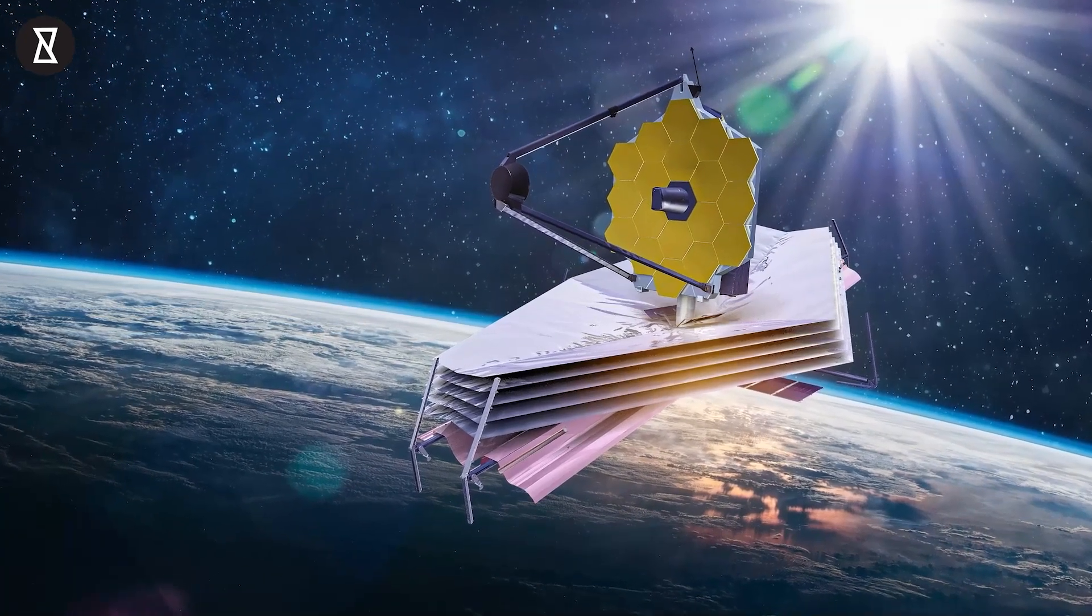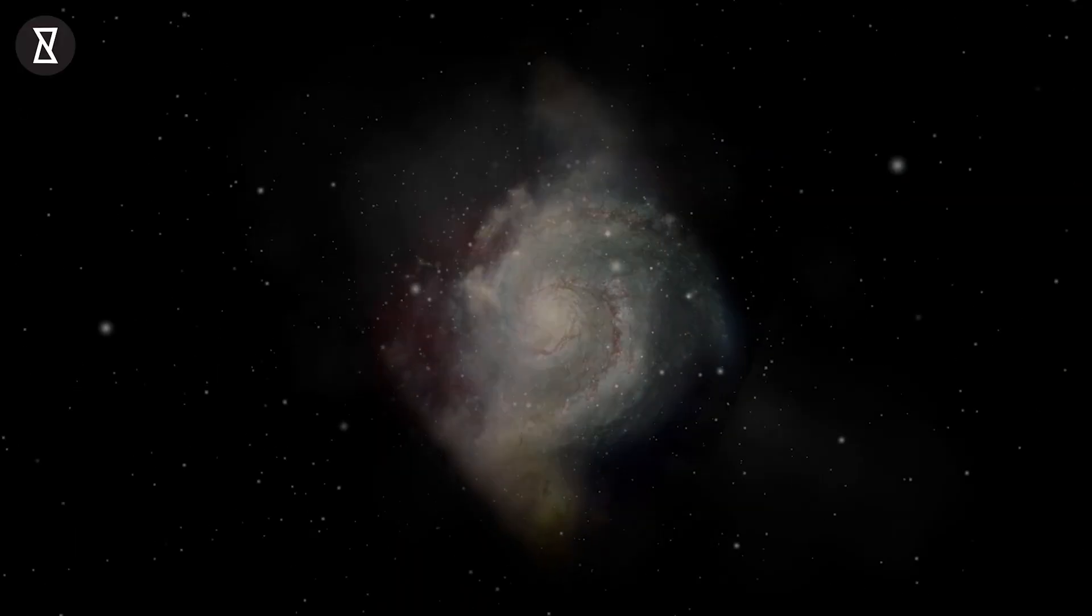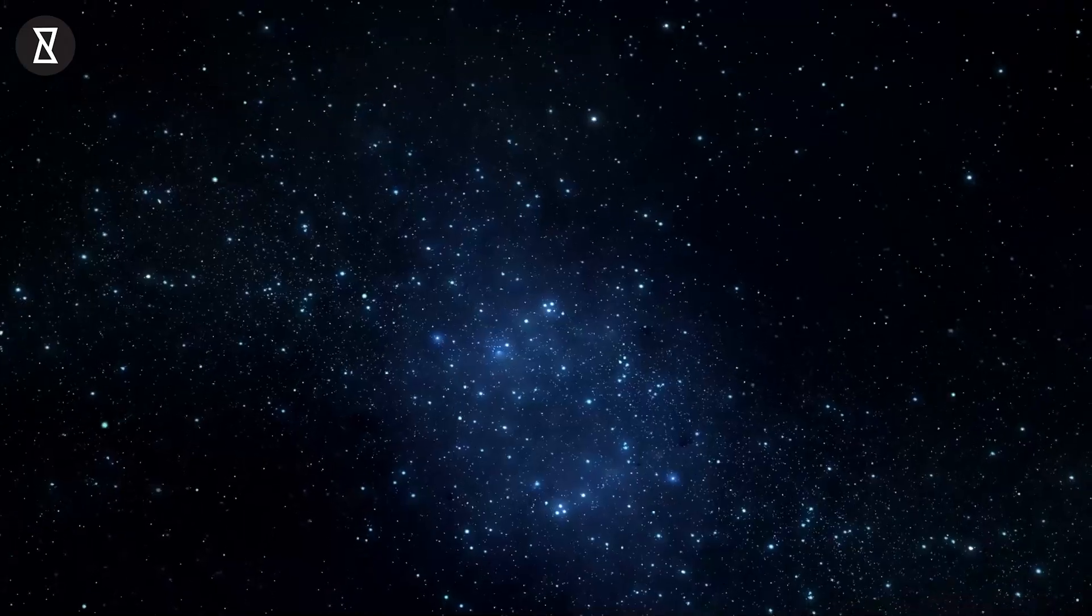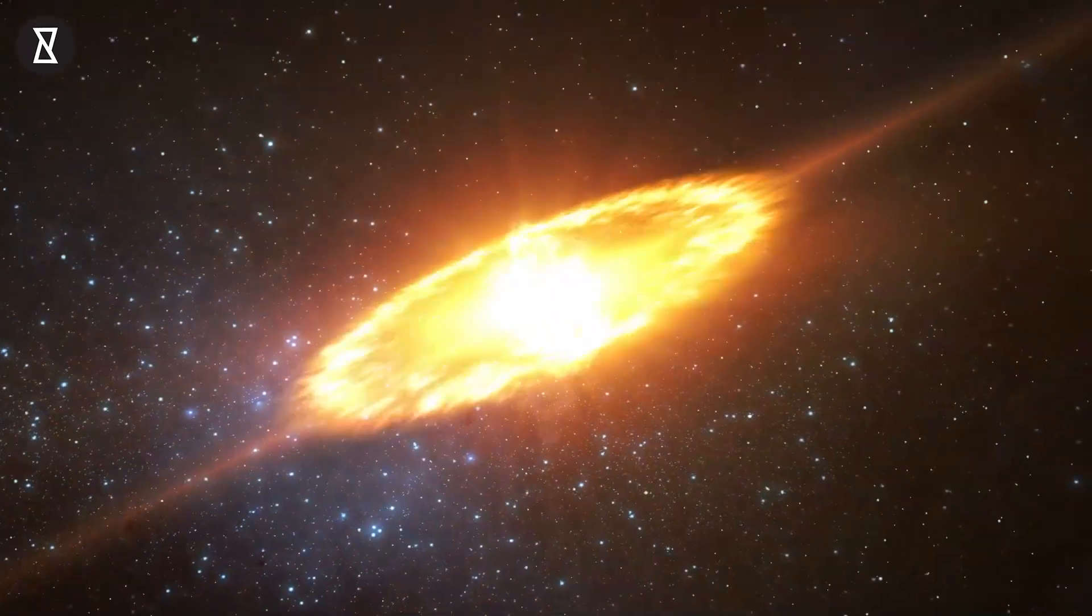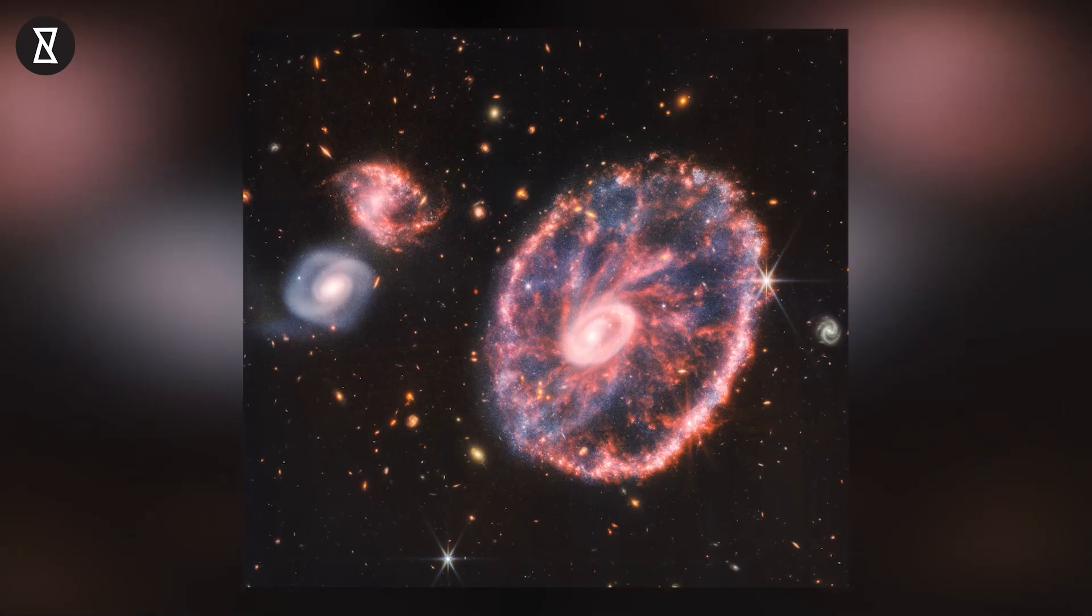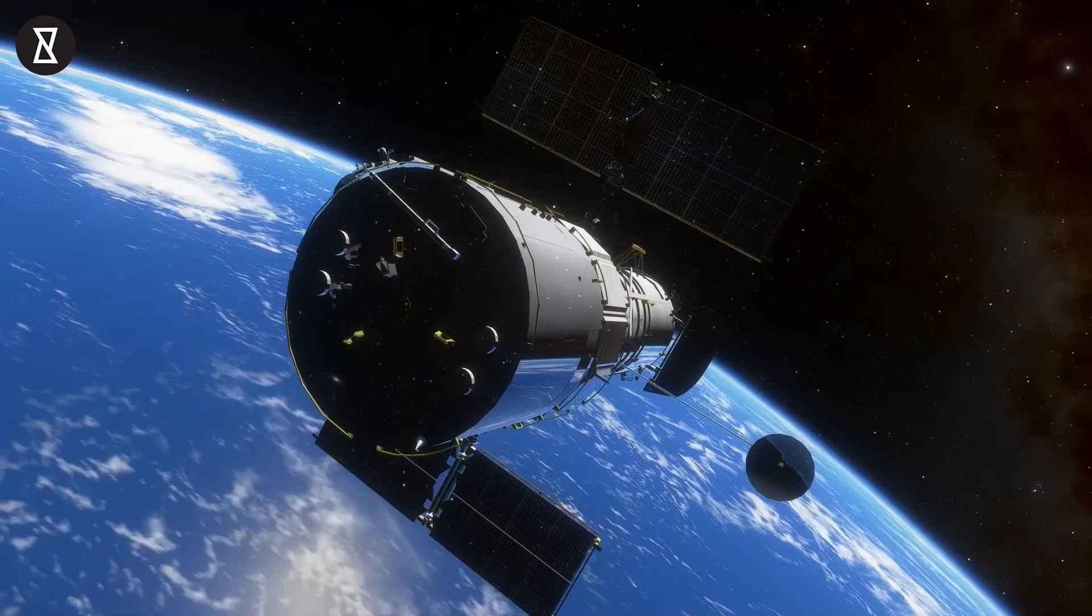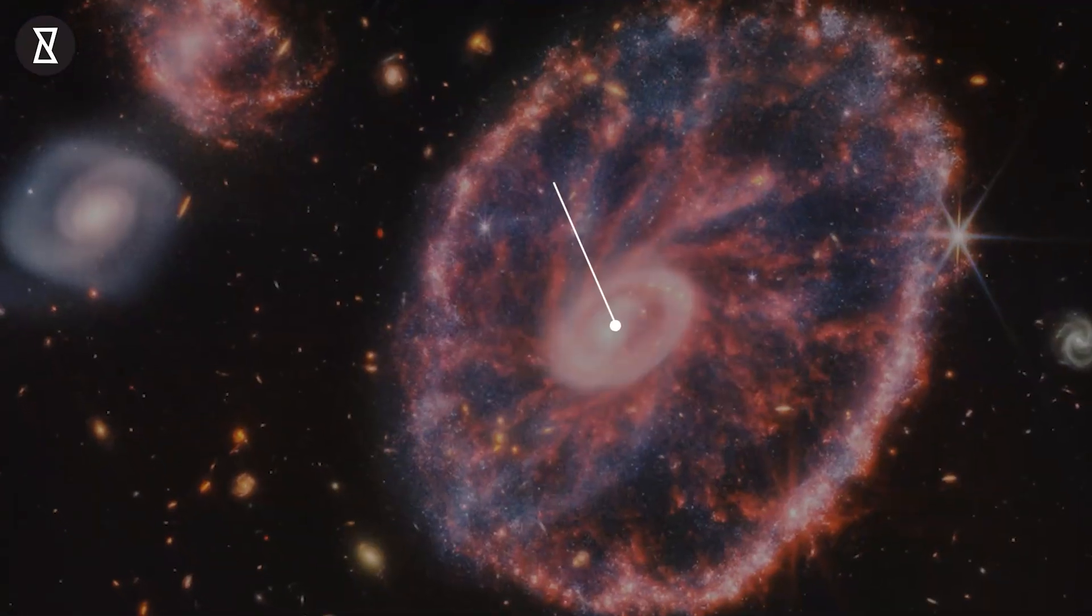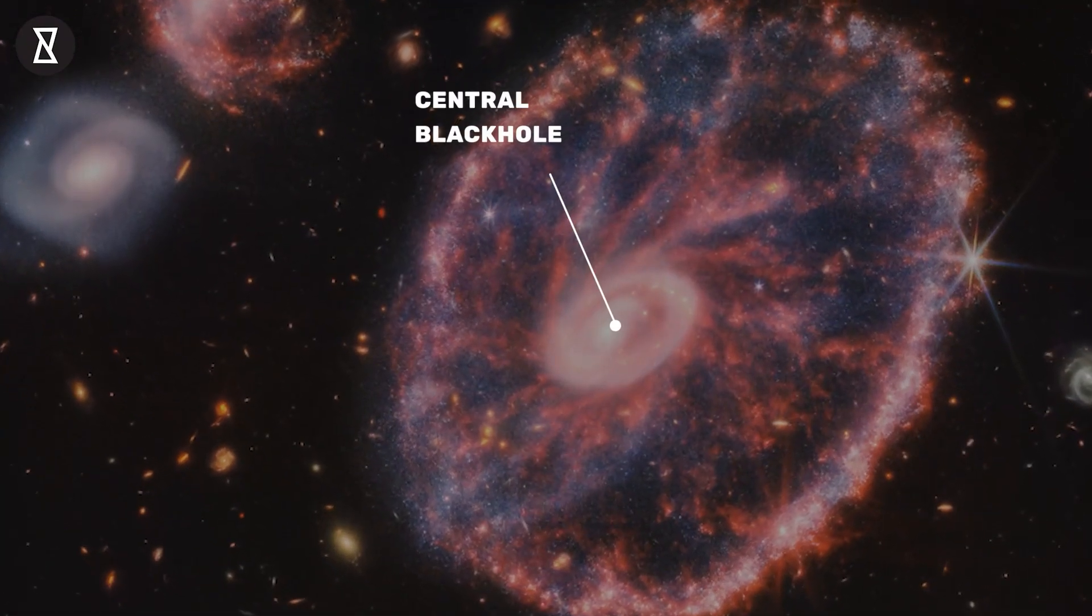Webb peered through dust and gas to reveal star formation in a rare wheel-shaped galaxy that formed in a long-ago galactic crash. The galaxy, called the Cartwheel, for its striking resemblance to a wheel of an old-fashioned carriage, was previously studied by the Hubble Space Telescope, but Webb's infrared gaze has revealed a plethora of previously unseen details in the galaxy's structure.